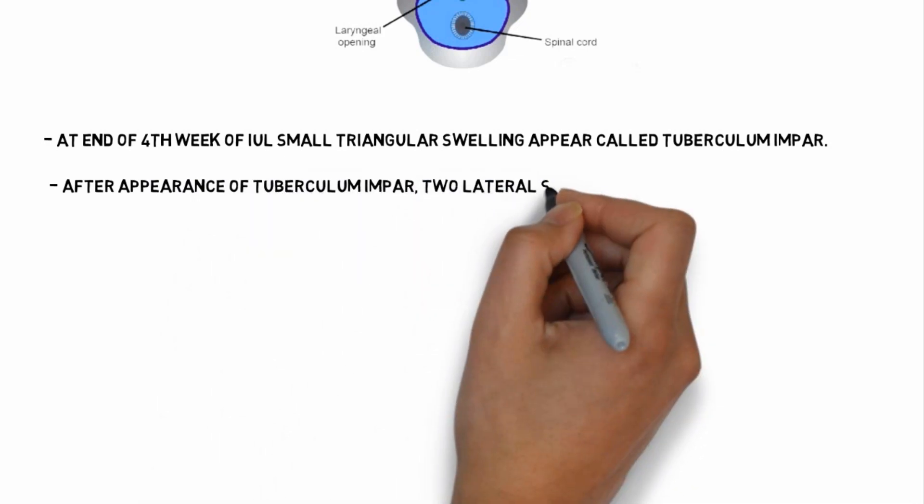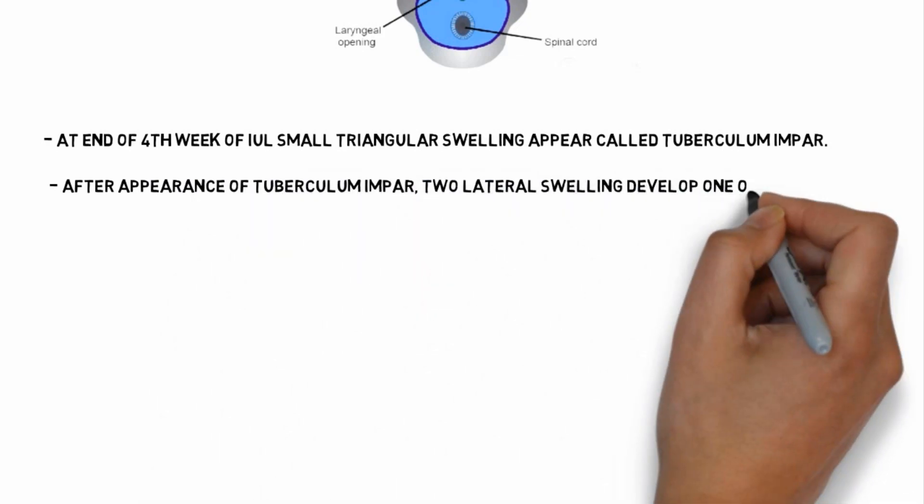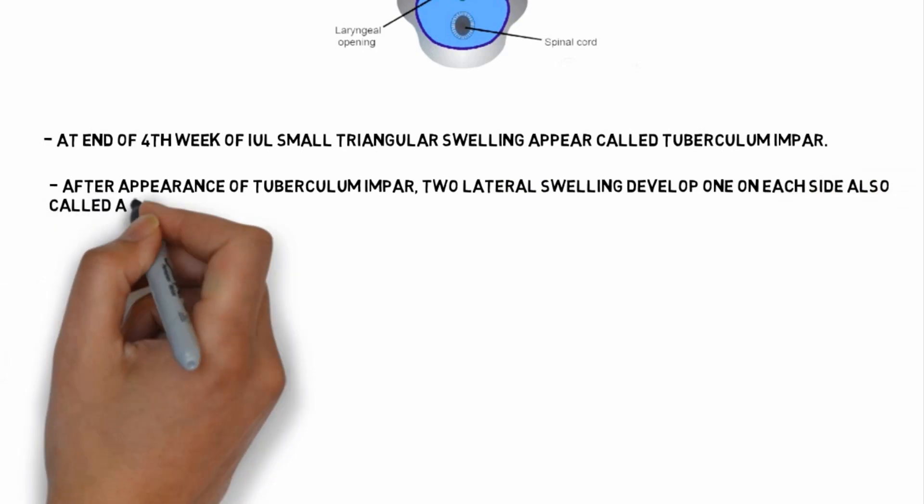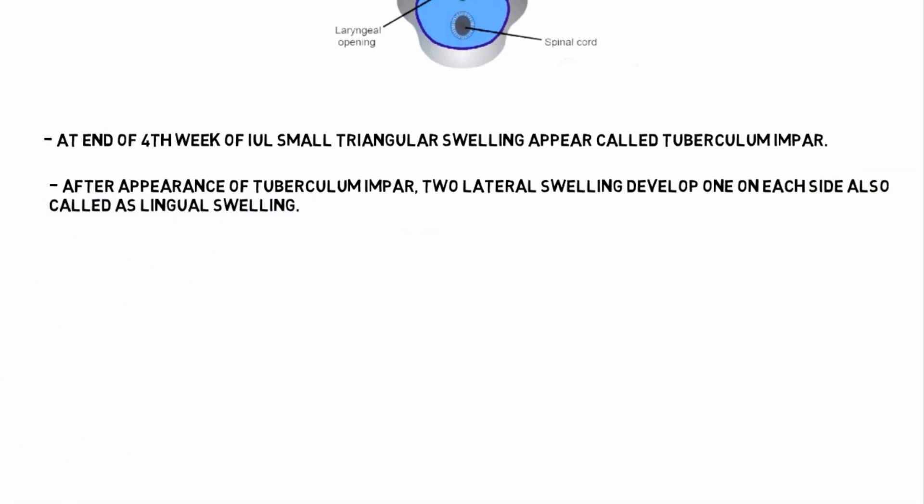After appearance of tuberculum impar, two lateral swelling develops one on each side, also called as lingual swelling.